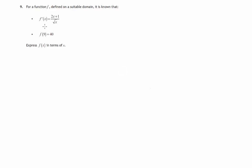So in this question we're given information about f dashed of x, it's this fraction 2x plus 1 over root x. We're also told that f of 9 is 40 and we're basically asked to find the formula for f of x.